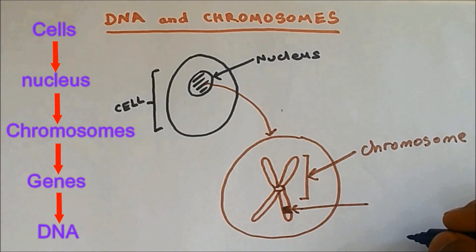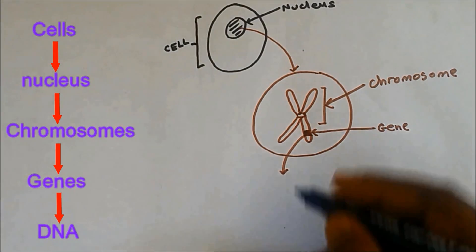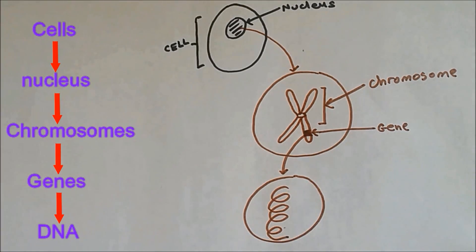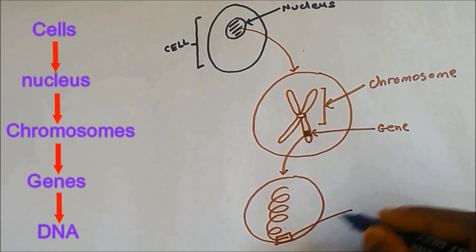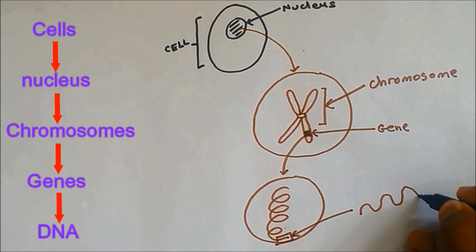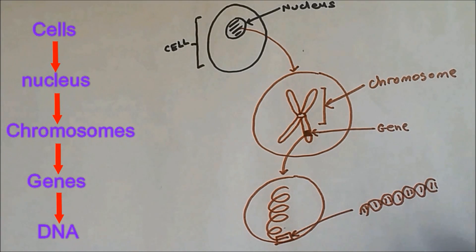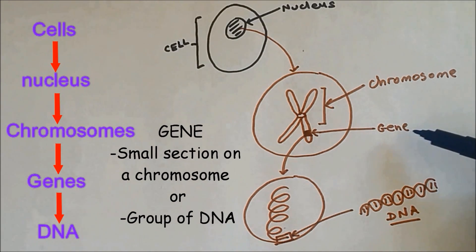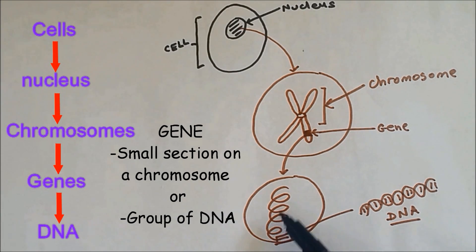A small section on a chromosome is called a gene. If I zoom in, this is the detailed structure of a gene. If I zoom in further, the last structure I obtain is DNA. So a gene can be called a small section of a chromosome, or it can also be called a group of DNA — a group of DNA makes up a gene.